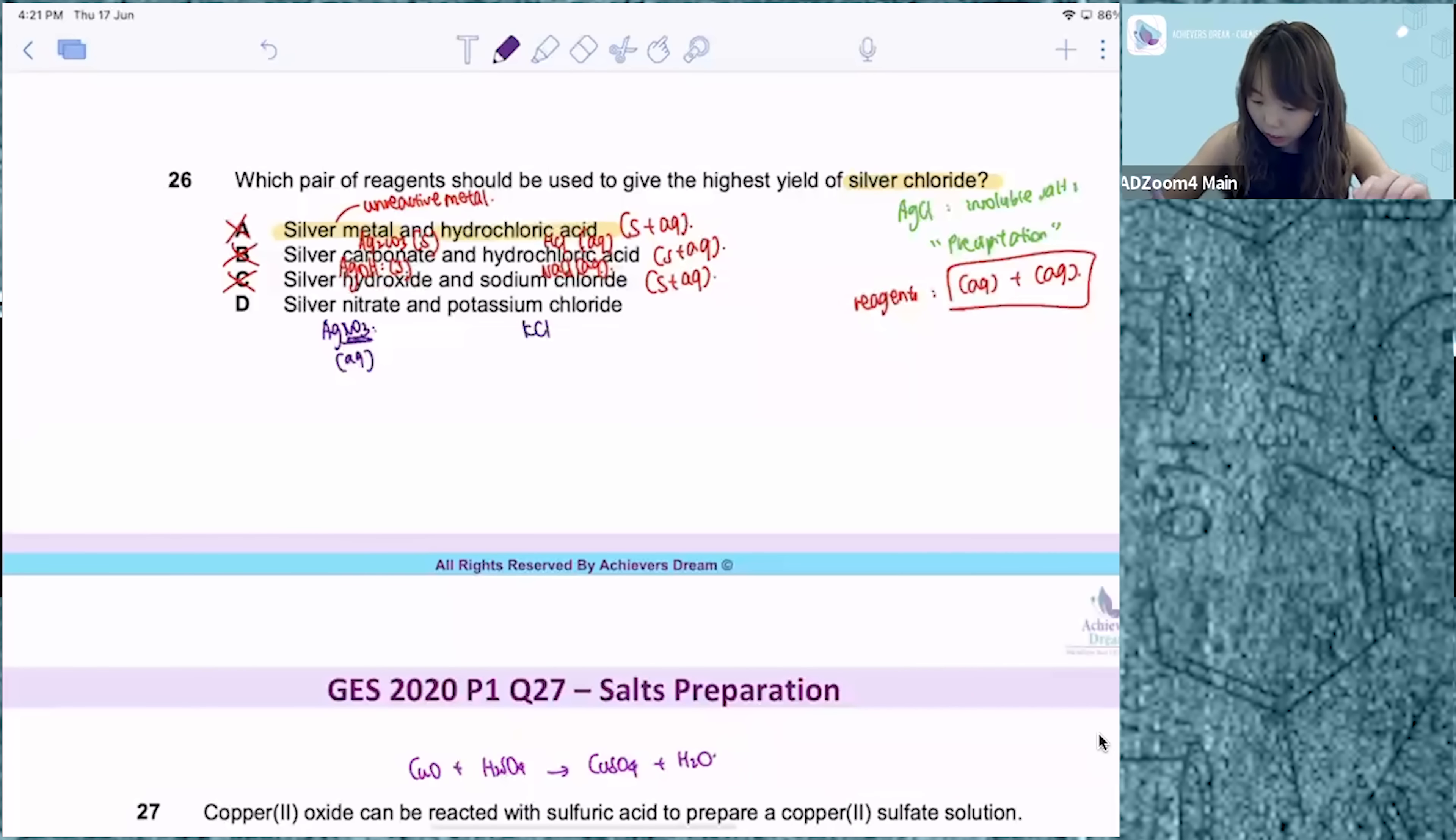Then for potassium chloride, this is also a group 1 compound. All group 1 compounds are soluble. So for option D, this is an aqueous-aqueous combination. You can use this to prepare your insoluble salt.